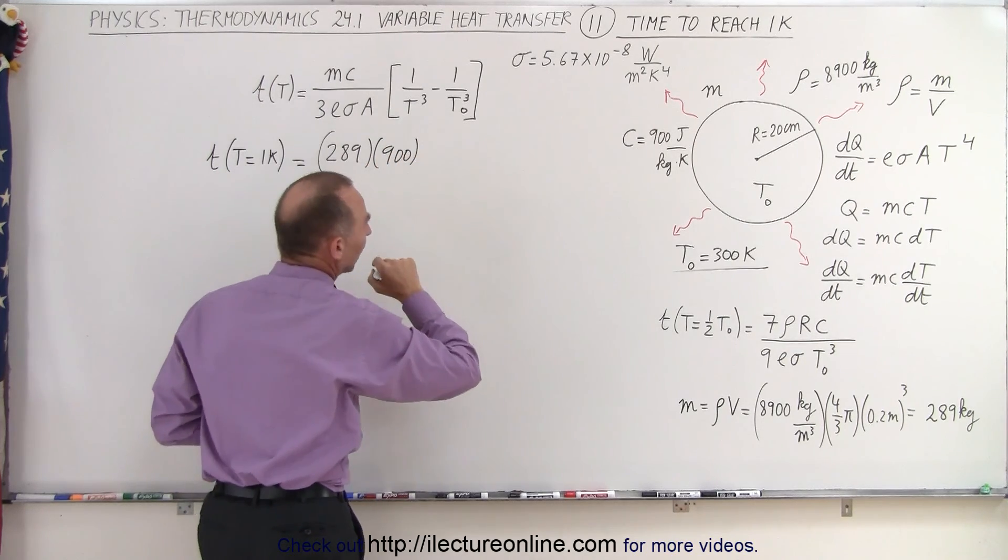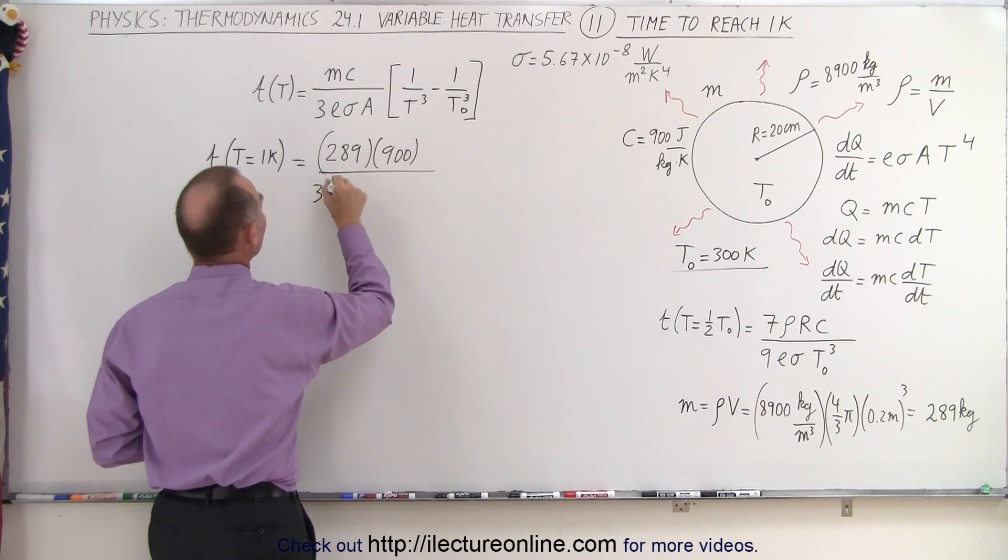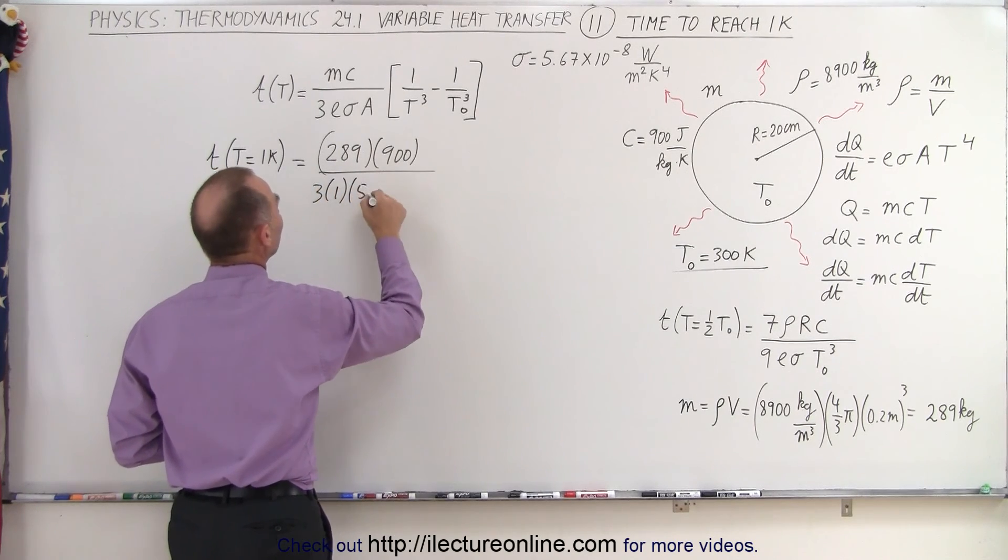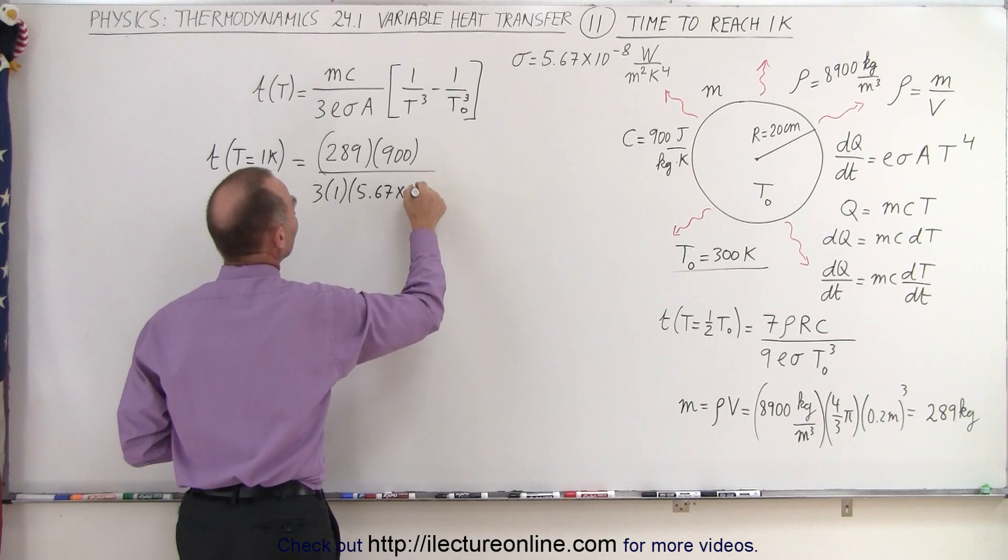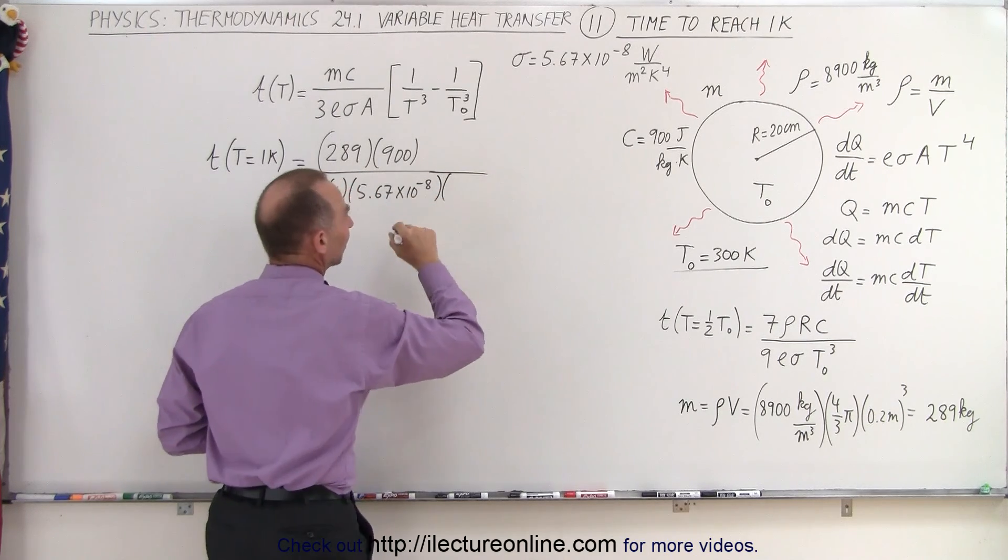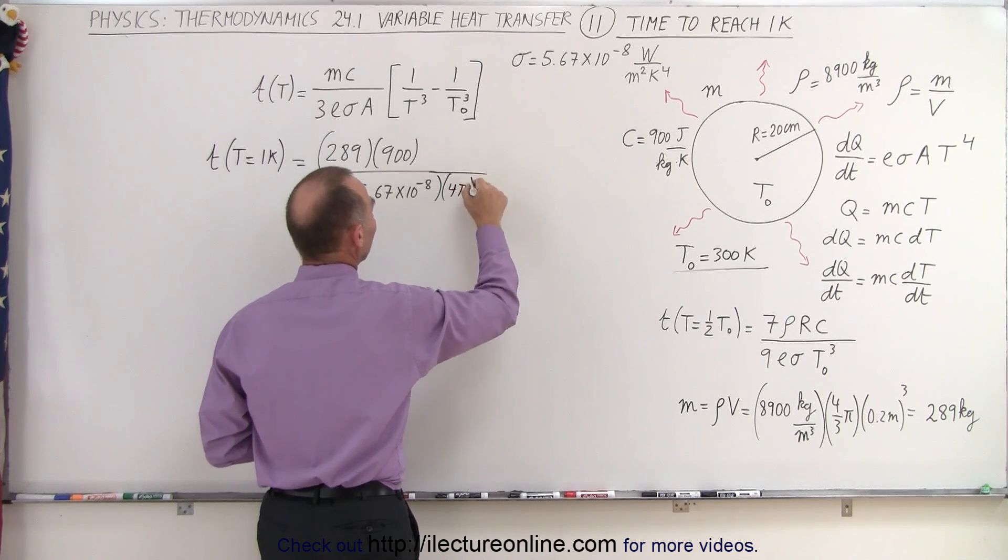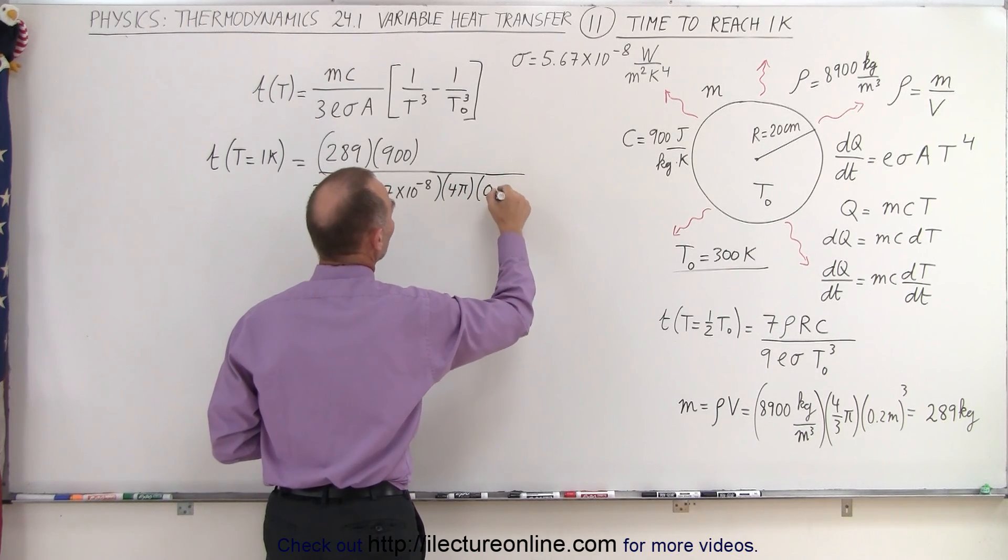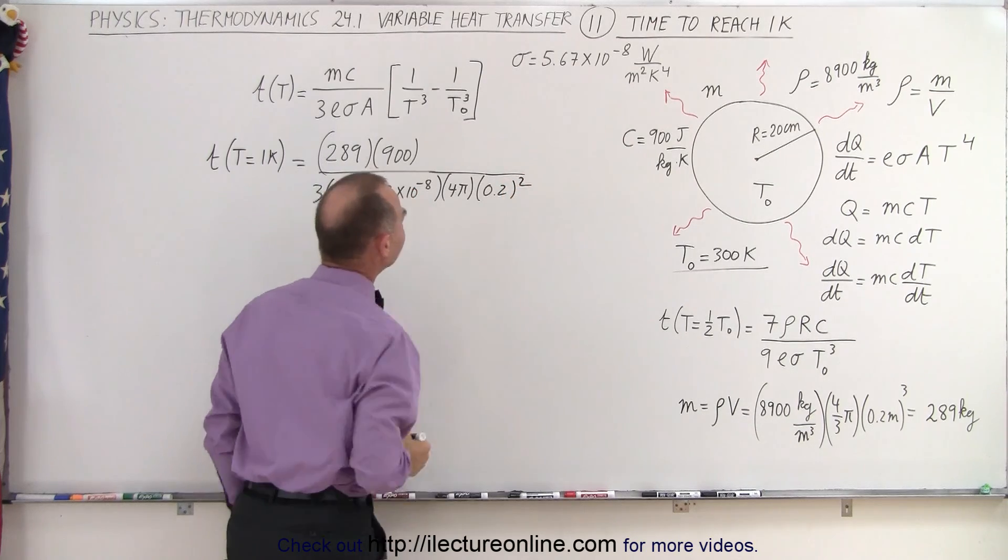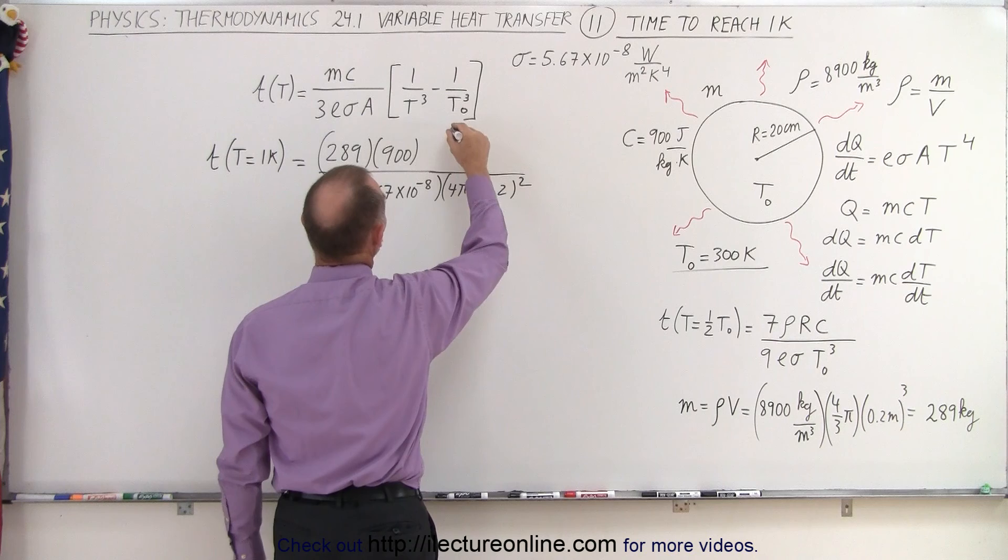Divide by three times 5.67 times 10 to the minus eight, and the surface area of the sphere would be four pi times the radius squared, 0.2 quantity squared.